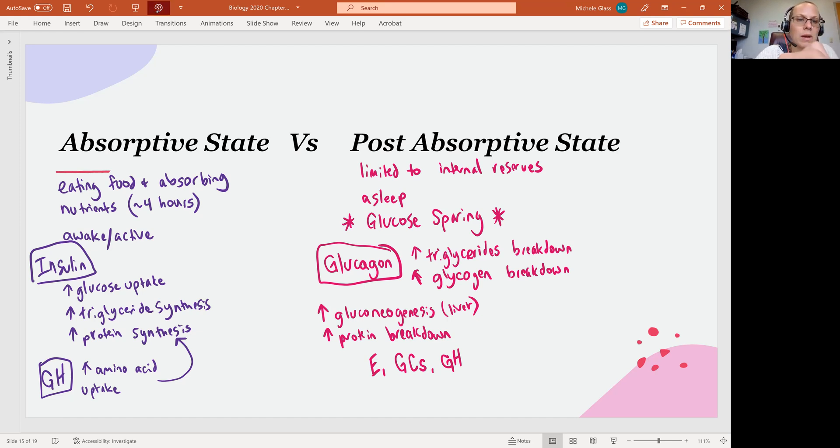If we go back and think about the absorptive state, we do want to look at how carbohydrates, lipids, proteins, and nucleic acids are digested. So we do need to know how carbohydrates, lipids, proteins, and nucleic acids are digested. Meaning, are they digested in the mouth, in the stomach, in the small intestine? What are the enzymes that are involved in the digestion? And then how do we actually get those nutrients, those ingredients, absorbed into the bloodstream during the absorptive state?